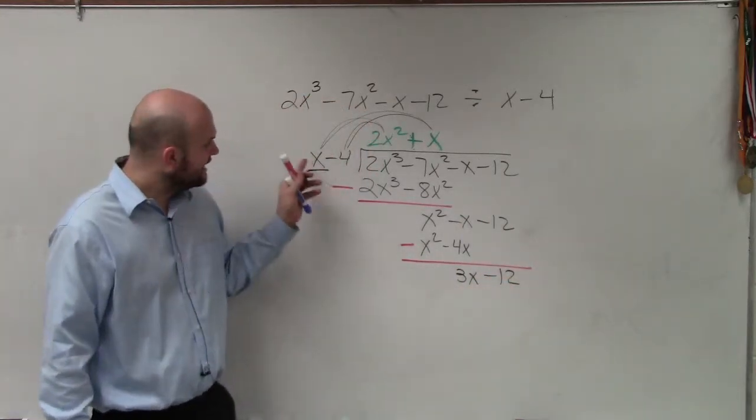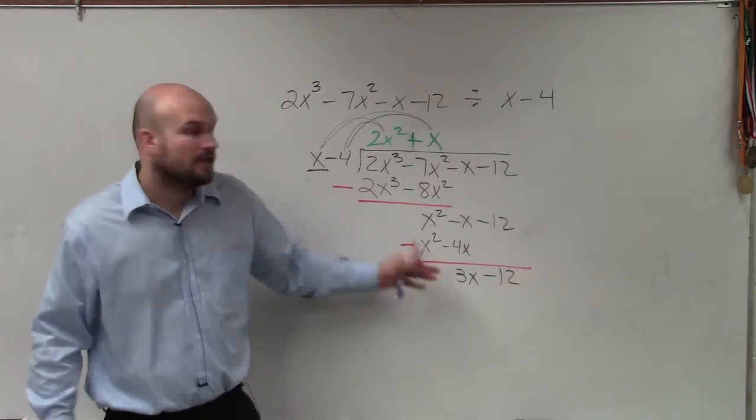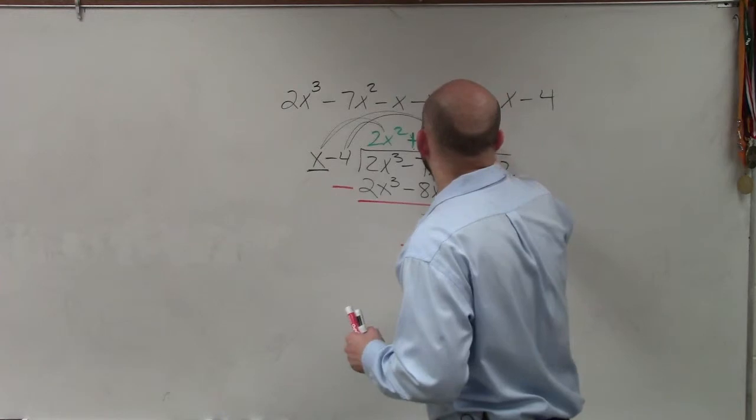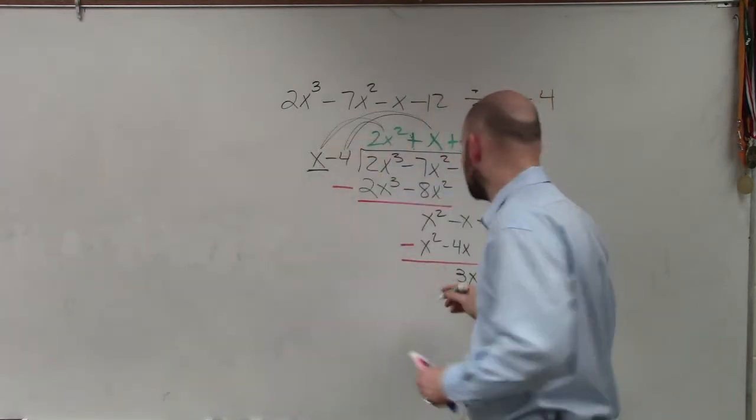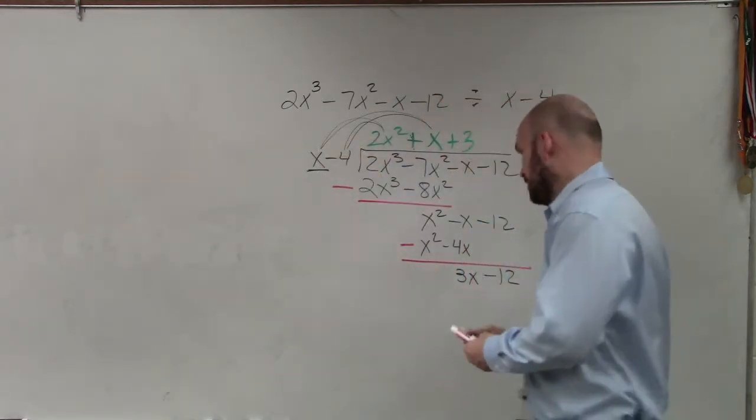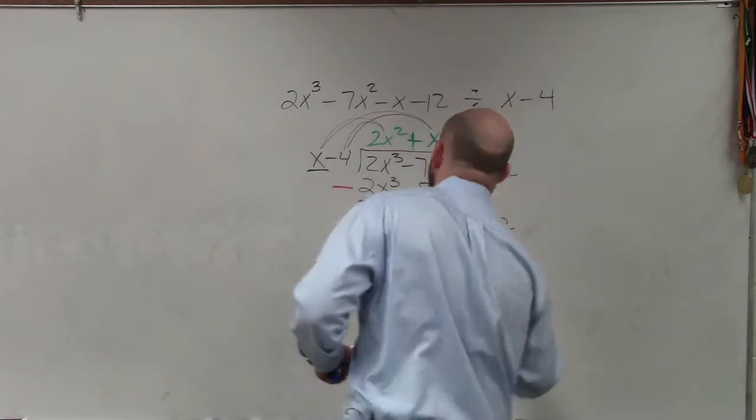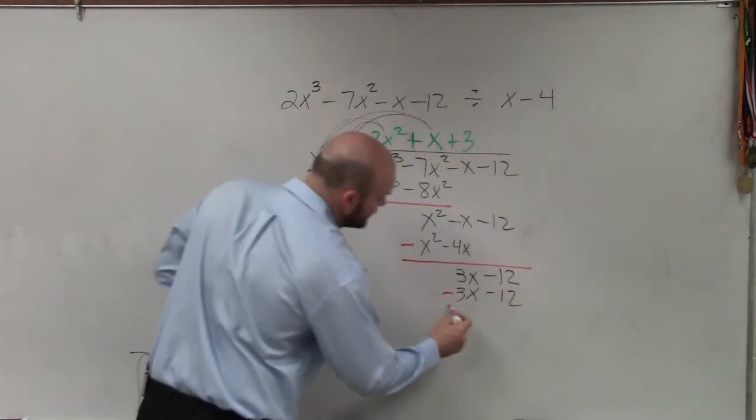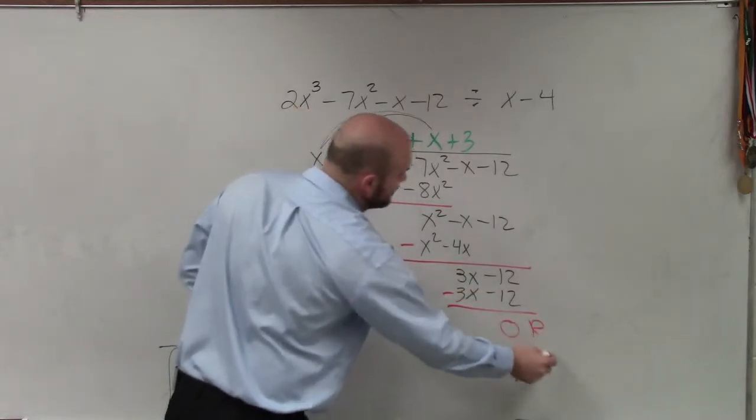So last one, x divides into 3x three times, plus 3. 3 times x is 3x. And 3 times negative 4 is negative 12. Again, you subtract the rows. And what you get is 0.